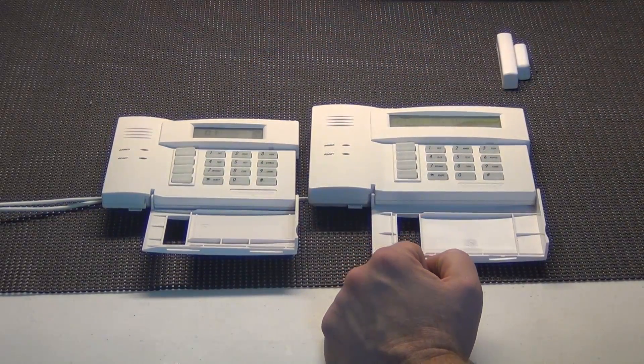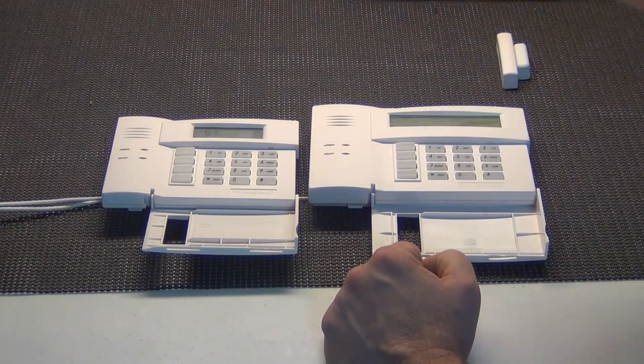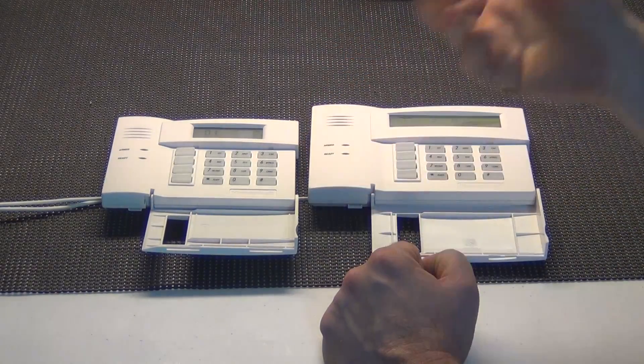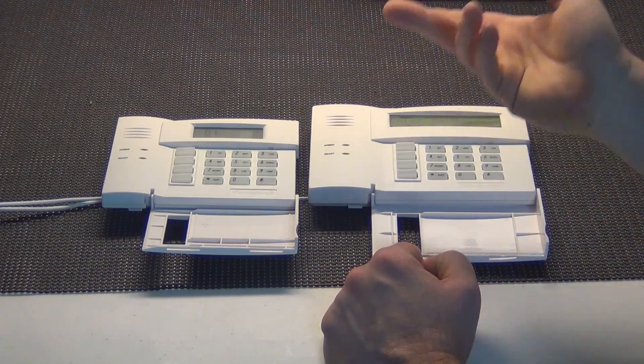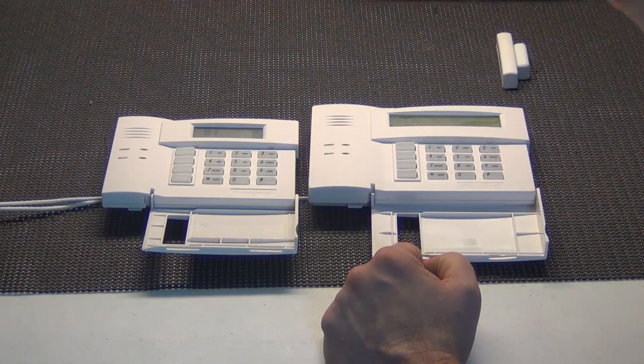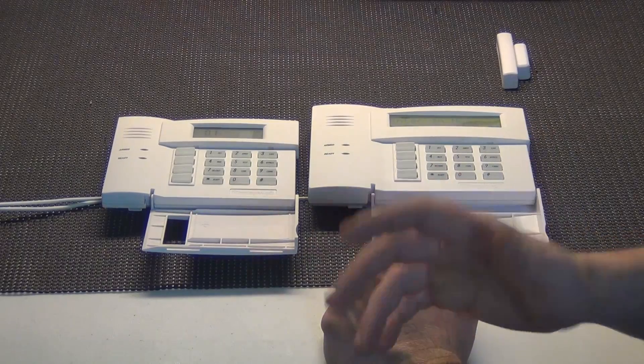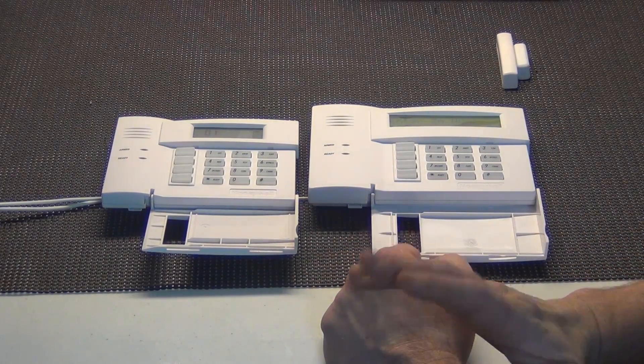Either keypad will work on a Vista series system. You can use them in conjunction with each other. You can get a 6160 for your main keypad and then 6150 for your secondaries, or you can use 6160 throughout your entire system. Kind of depends on how you want to set it up, what your price points are.